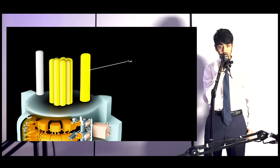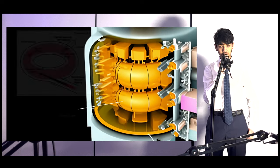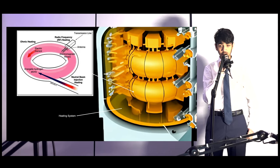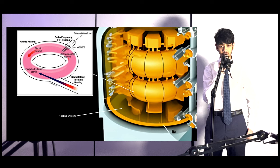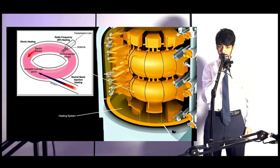A series of sophisticated heating systems are employed, including ohmic heating to create an initial seed population of ions and electrons, neutral beam injection for further heating via ionization and energy release, and radio frequency heating utilizing electromagnetic waves to energize ions and electrons within the plasma.